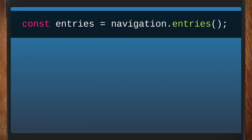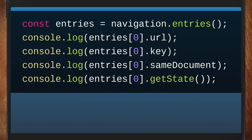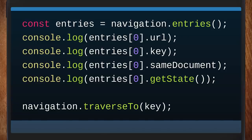This is what the new thing gives us - you get to say show me your history entries for this page, and it just gives you a list of entries and it will tell you things like the URL, their key, whether they're same document, and you get to look at the state of each one as well. That's exciting. None of this you could do previously. And you can also tell it to traverse to one of them. It's stuff we should have just had from the start, because the browser knows all this stuff already. Less busted.